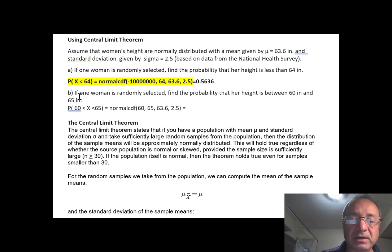Okay, here is another question. If one woman is randomly selected, what's the probability that her height is between 60 and 65? Also, this is just one individual, so it doesn't have to do anything with the central limit theorem yet.